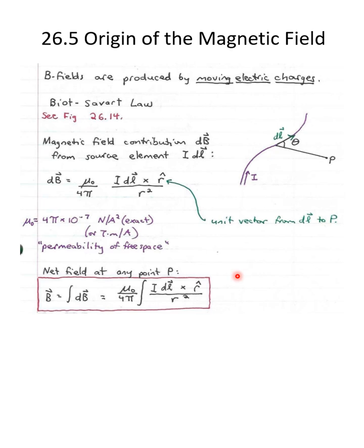That equation gives the little increment of magnetic field. When we take it over the entire current — maybe the entire wire — we get that the magnetic field is the integral of all the little dBs. Mu naught over 4 pi is a constant, so we put that outside the integral, and we're left with mu naught over 4 pi times the integral of I DL times R hat over R squared. That is the Biot-Savart law.